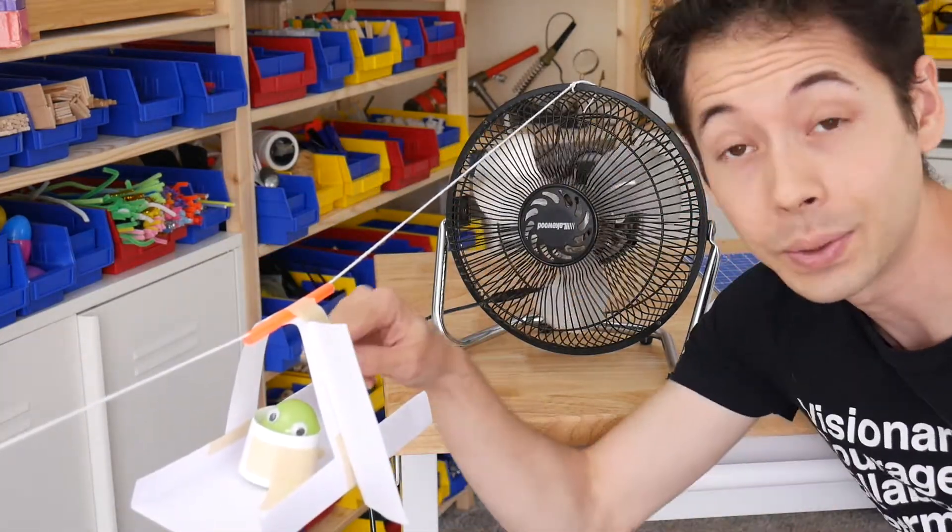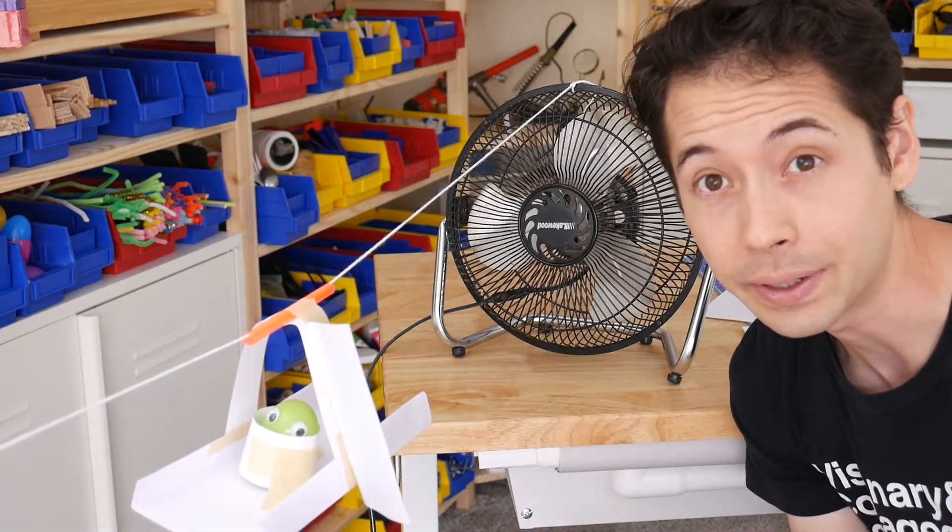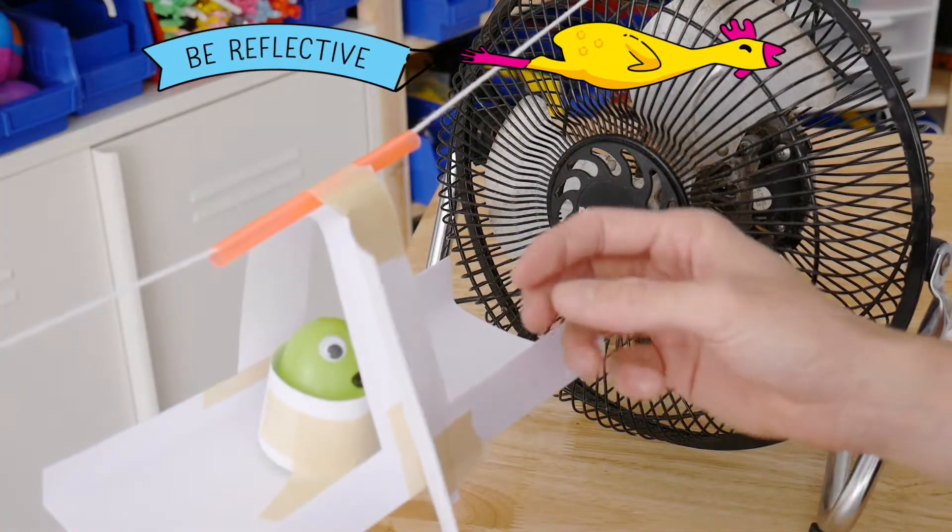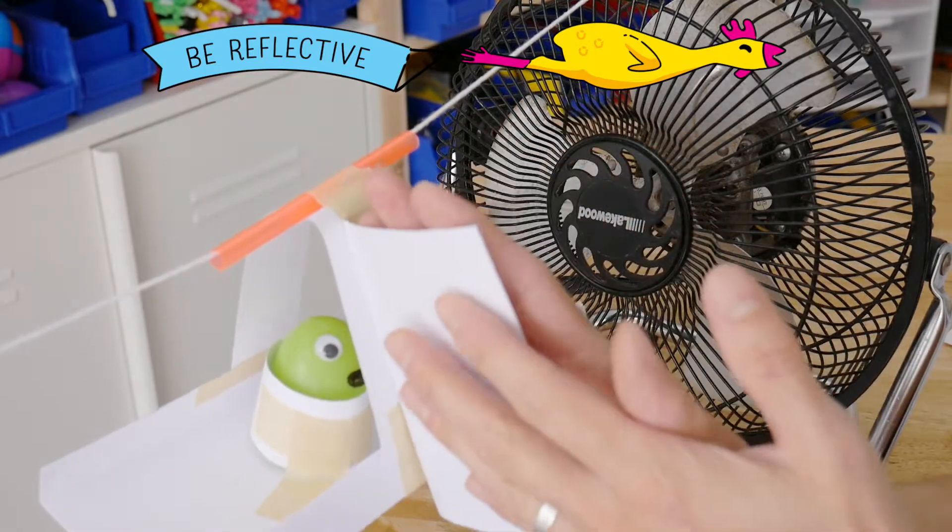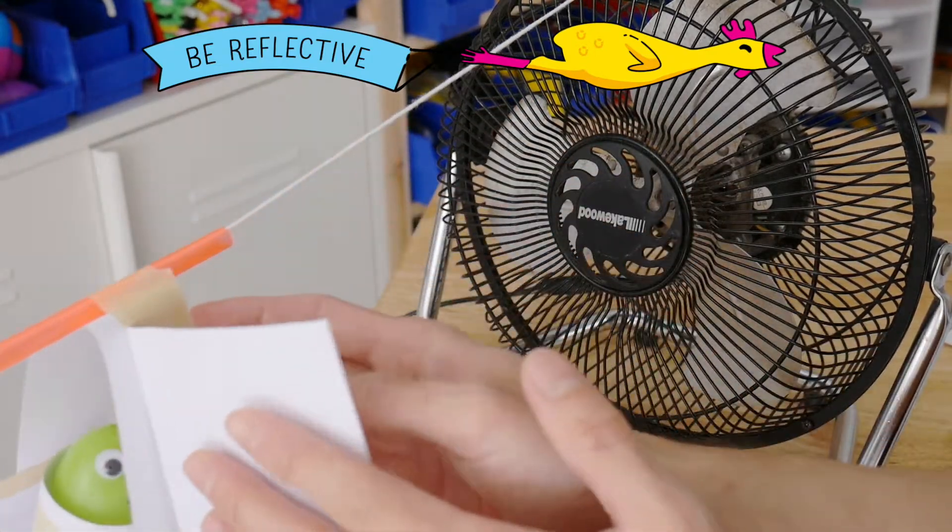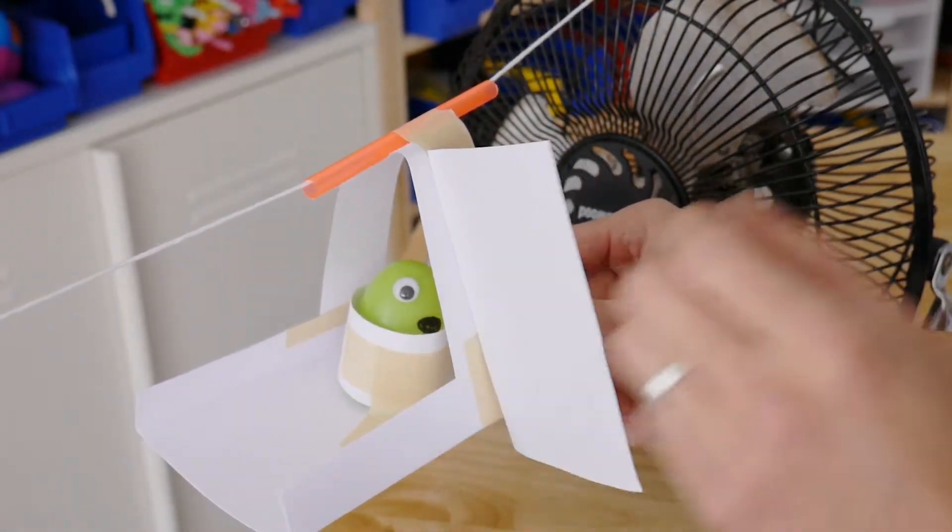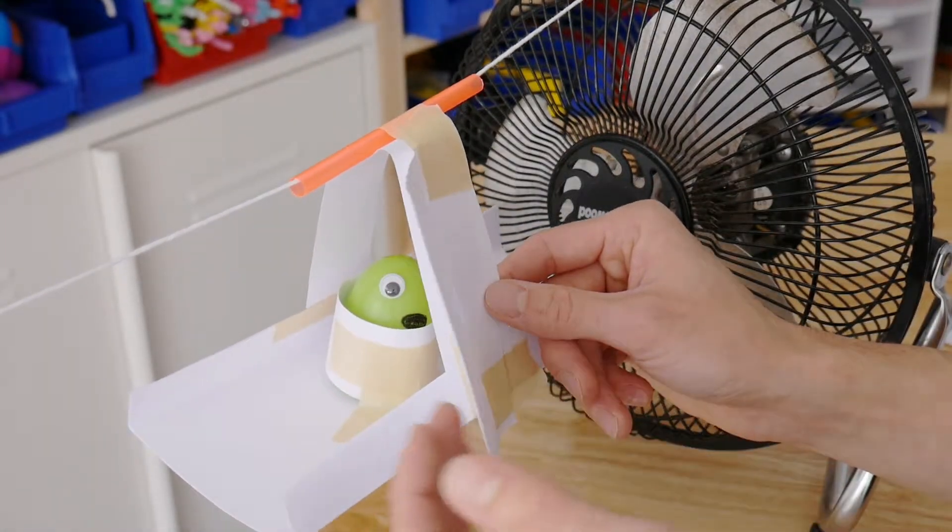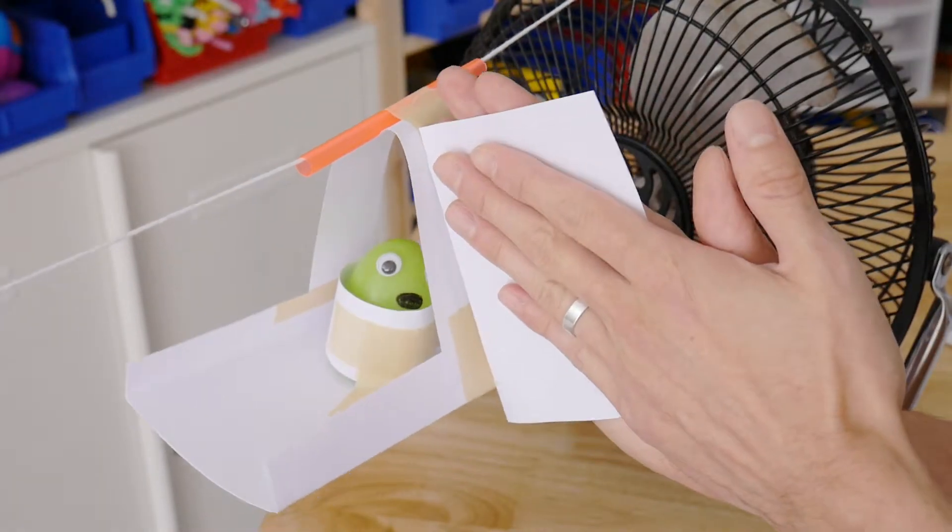Well at least the toy is staying inside the carrier but it's not really going anywhere so we need to redesign. Well I'm being reflective and noticing that one sail probably isn't enough to catch all the wind that we need to propel the carrier far down the zipline. I'm also noticing that this sail is flopping forward and we need this to stay in this position so that it can catch the wind and propel the carrier.